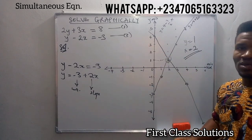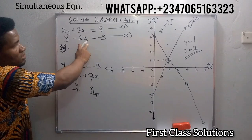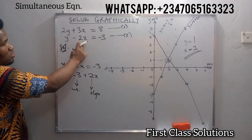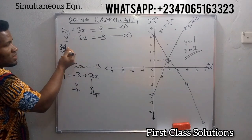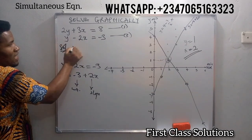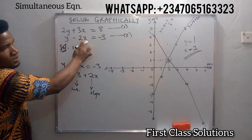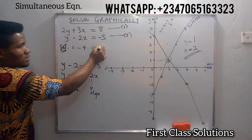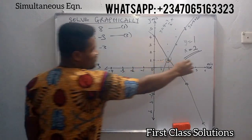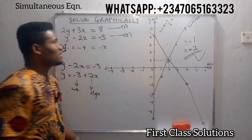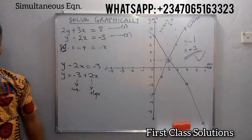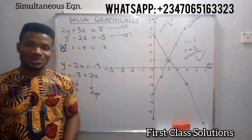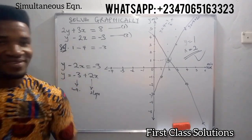We can actually verify it. We have y minus 2x equals to minus 3. When we put y equals 1 and x equals 2: 1 minus 2 times 2 is 1 minus 4, which gives us minus 3. So these are the correct values of x and y that satisfy both equations. Thank you so much for watching the video. Do share this video with your friends. God bless you.